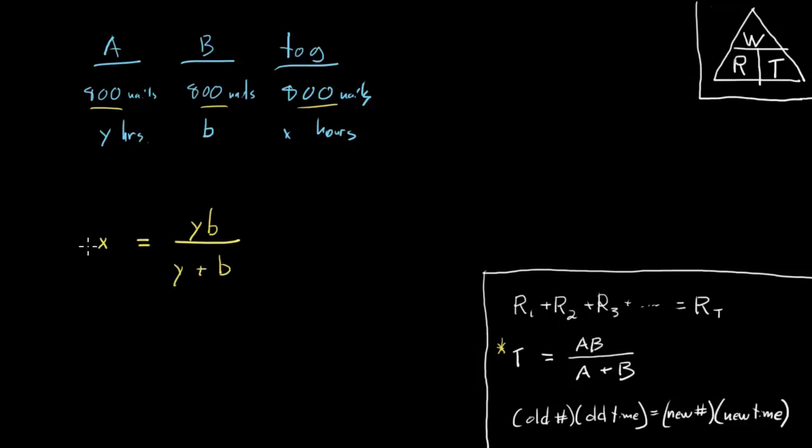So now we've got an equation and what are we looking for here? Well, we're asked for the time for machine B to do this job, so we just need to do some algebra to isolate B. I want to give myself a little bit more space here so I'm going to move this up. Now we can get to algebra. First, getting rid of this fraction.